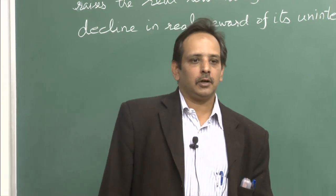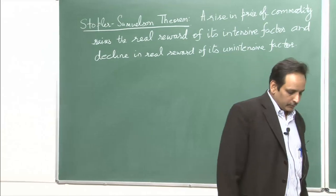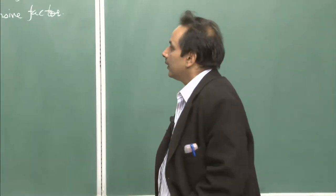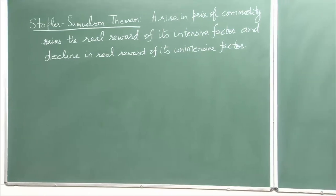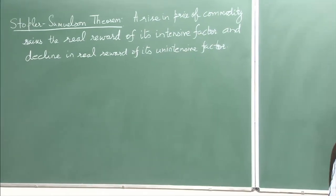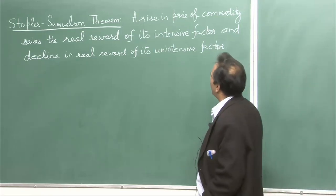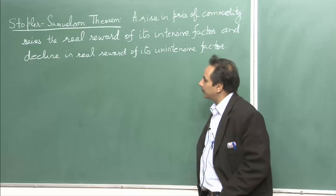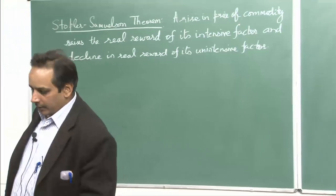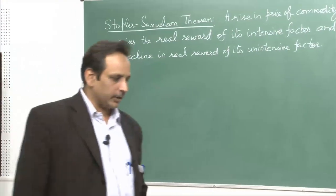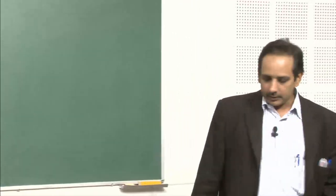Good afternoon. Today we are going to prove the Stolper-Samuelson theorem. The Stolper-Samuelson theorem says that a rise in price of a commodity raises the real reward of its intensive factor and a decline in the real reward of its unintensive factor. This theorem dates back to the year 1949.